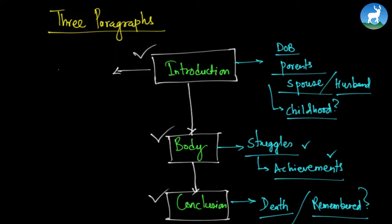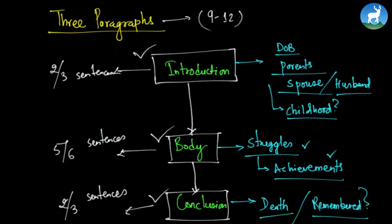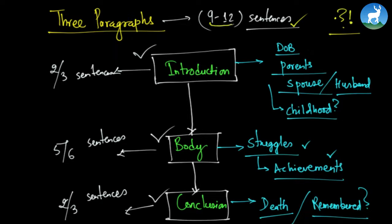In the introductory part, you will write two or three sentences. In the body paragraph, you would generally write five or six sentences. In the conclusion paragraph, you would again write two or three sentences. So that is around nine to twelve sentences — not lines, sentences. Sentences begin with a capital letter and end with a full stop or period, question mark, or sometimes an exclamation mark. So nine to twelve sentences — that's around a page of A4 size paper.